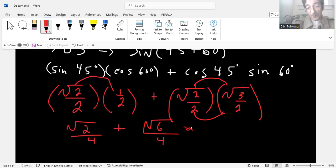So now you can either, it depends on your instructor. You can either keep it like this as your answer, or you can factor out the one fourth and keep the radicals inside. So radical two plus radical six over four. That's not difficult, is it? You're just plugging in the values of these degrees once you break it down into factors.